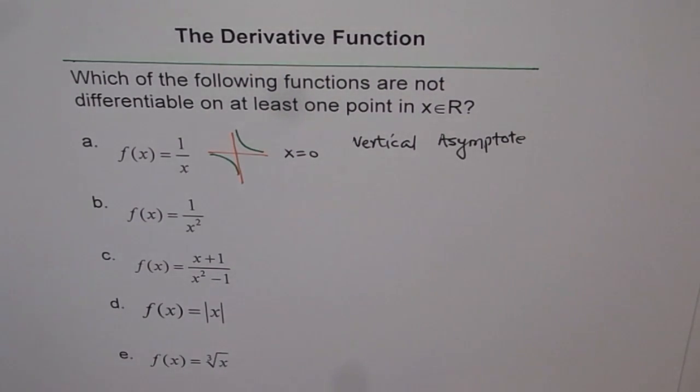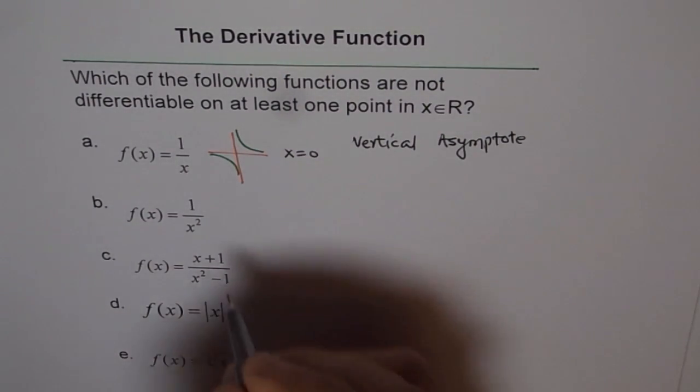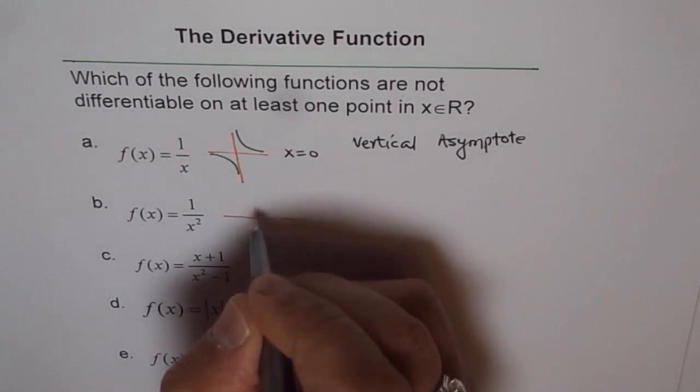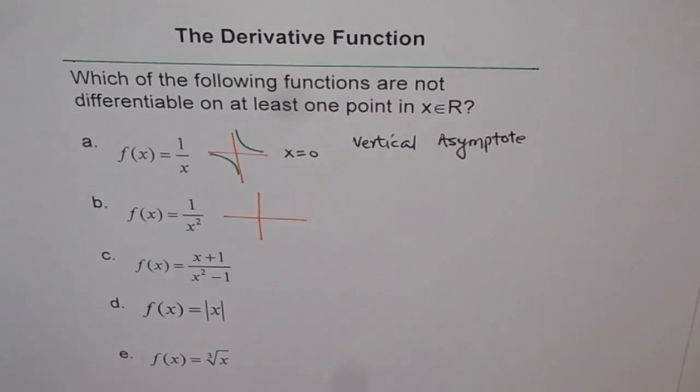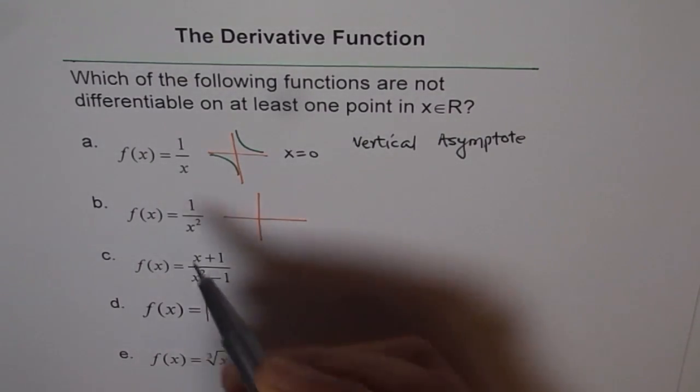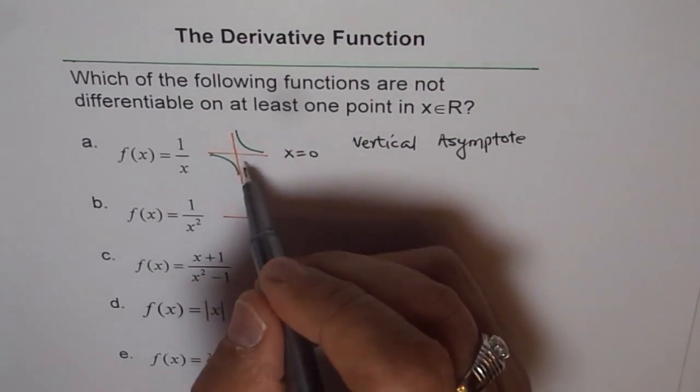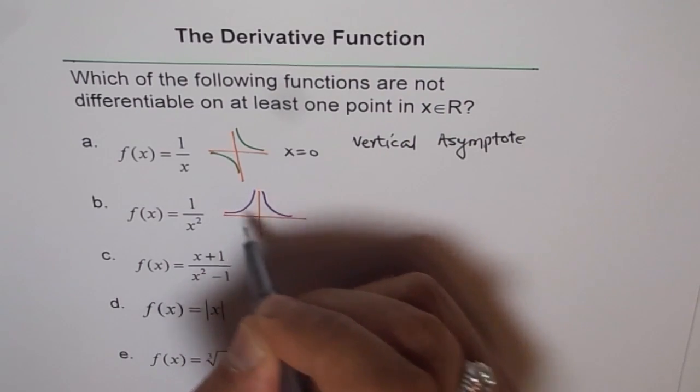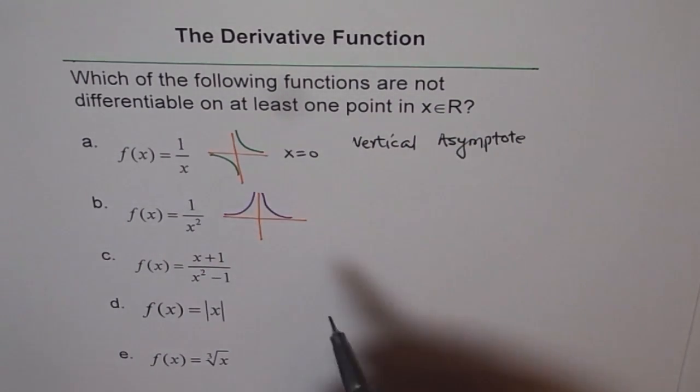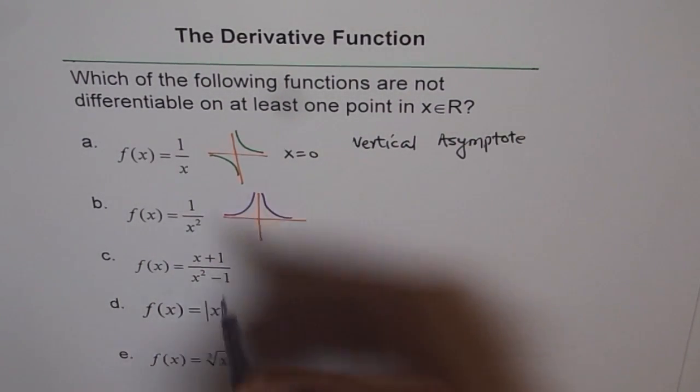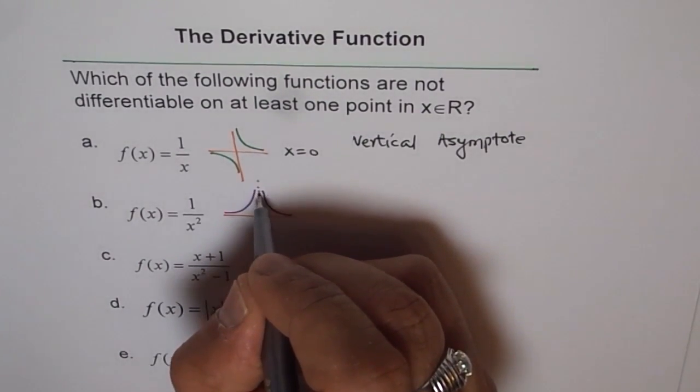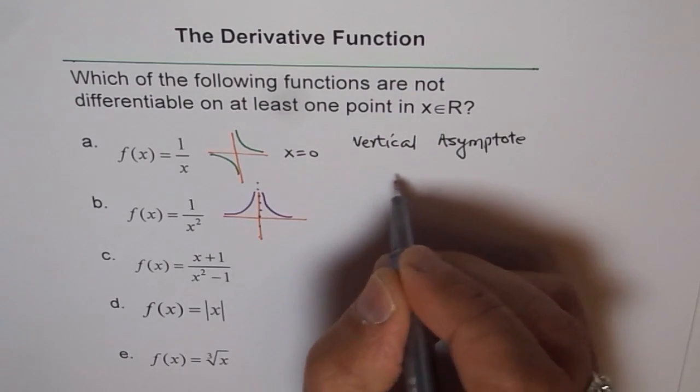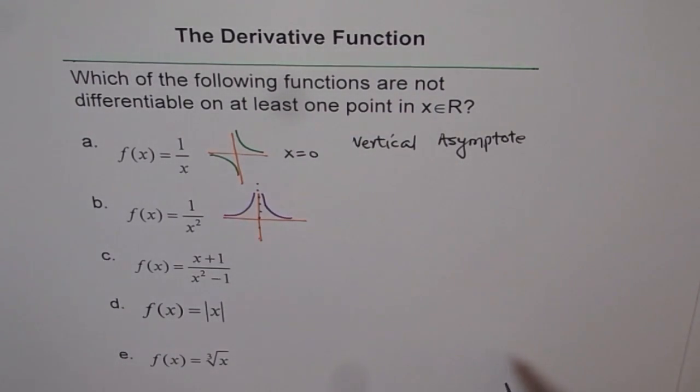Let's look into the next function, which is 1 over x squared. Can you draw the graph for this one? So x squared is, let's square this up. When you square this up, you will get everything positive. It will be steeper, but positive. And the reason is same. At x equals 0, we have this vertical asymptote. So it is not differentiable.